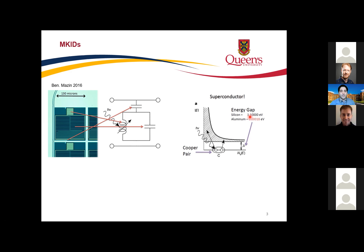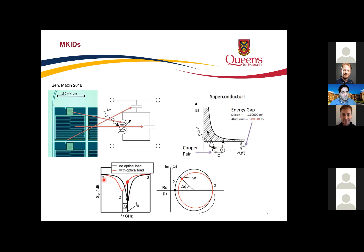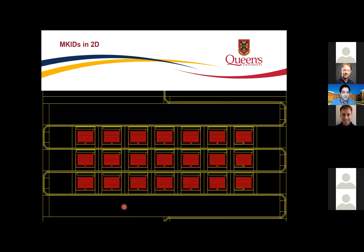That is why superconducting detectors are much more precise than semiconductor-based ones. When a photon hits and breaks Cooper pairs, what we measure macroscopically is a shift. Without any signal, we have a clean resonator in the IQ plane and in S-parameters. When a photon hits, the kinetic inductance changes, producing a shift in resonance frequency, amplitude, and phase. We usually measure phase because the phase difference is much larger than frequency or amplitude shift, which increases sensitivity.